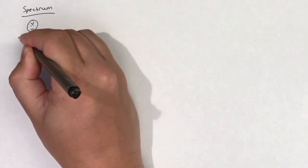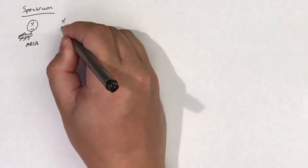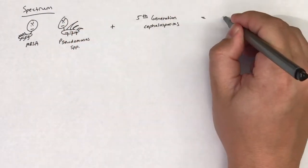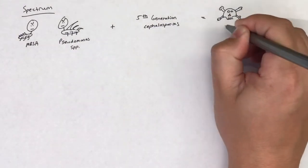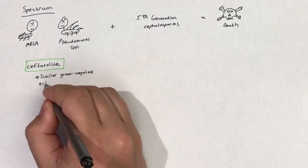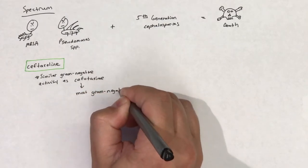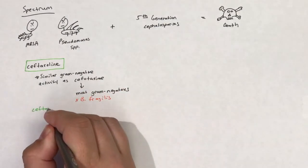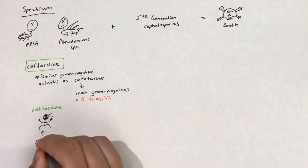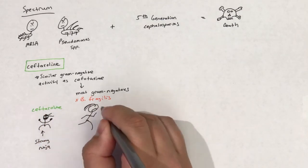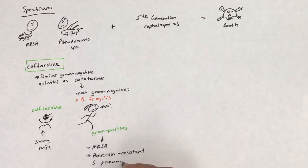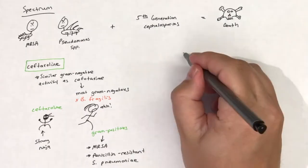Fifth-generation cephalosporins really shine when it comes to tough bugs like methicillin-resistant Staphylococcus aureus and Pseudomonas species. Ceftaroline has similar gram-negative activity as cephalotaxime, which includes most gram-negatives with the exception of B. fragilis. However, what really sets ceftaroline apart is its pumped-up gram-positive coverage, which includes coverage of MRSA and penicillin-resistant S. pneumoniae.